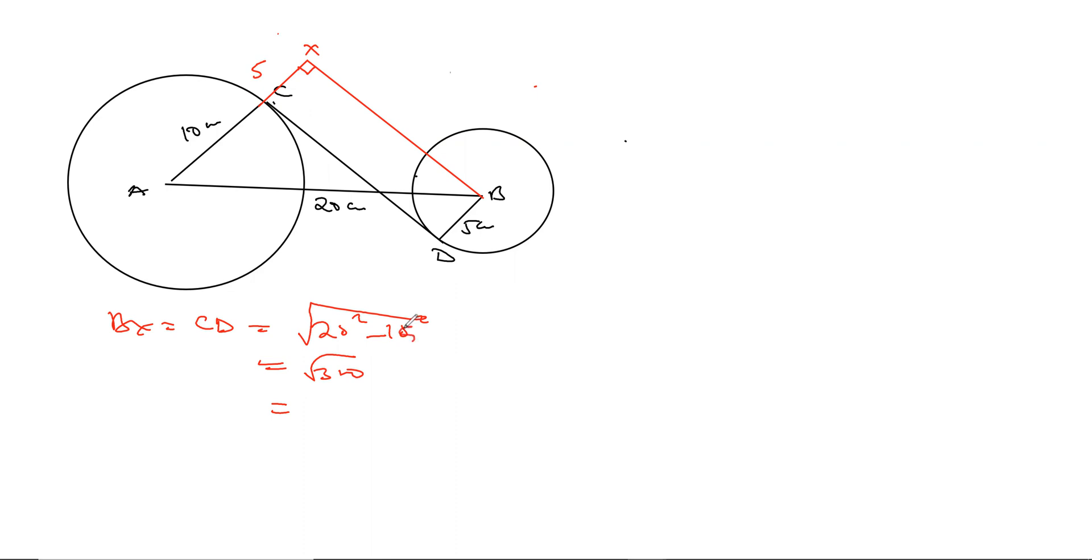It's supposed to be 15, because it is the length from here up to there. So it's 20 squared minus 15 squared. 13.2 centimeters. So it means that the length of the transverse common tangent CD is 13.2.